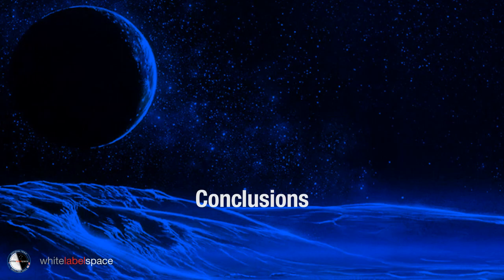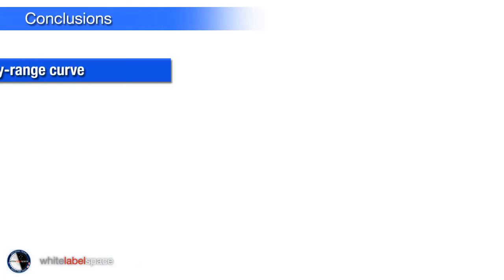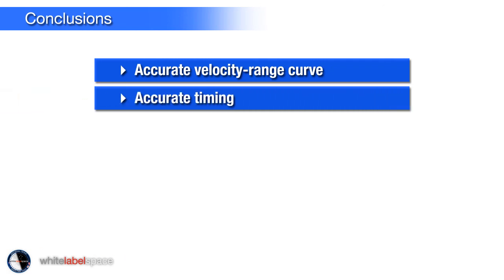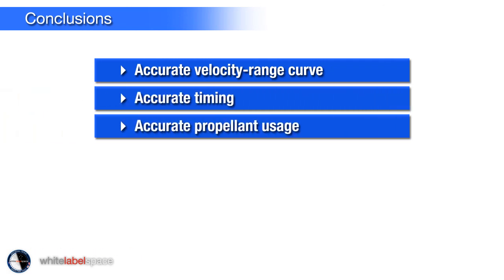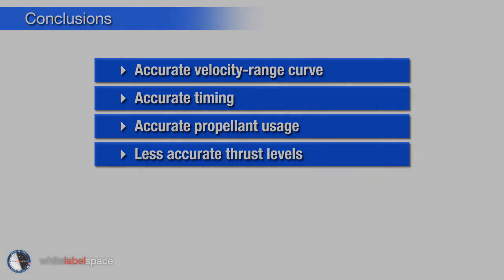In conclusion, we have achieved an accurate velocity-range curve, accurate timing, and accurate propellant estimates, though thrust levels are less well matched. This was our presentation on the progress made with the Surveyor 1 flight case. Thank you for your attention and we hope to see you next time.